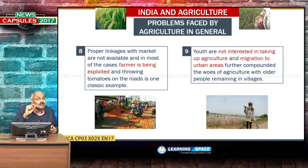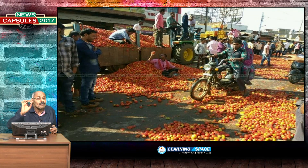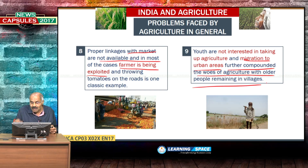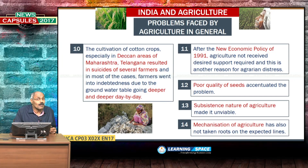Proper market linkages are not available, and in most cases farmers are being exploited. Throwing tomatoes onto roads is a common sight. In some seasons, tomato prices go as low as 50 paise per kg, and farmers are not even getting transportation costs. Something needs to be done in agricultural marketing. Youth are also not interested in agriculture, and migration to urban areas has compounded the woes, leaving elder people in villages.